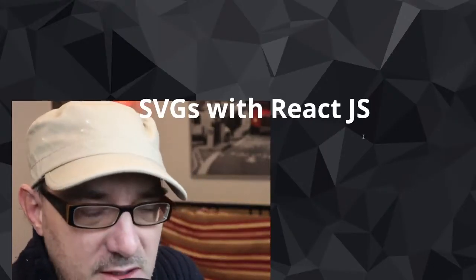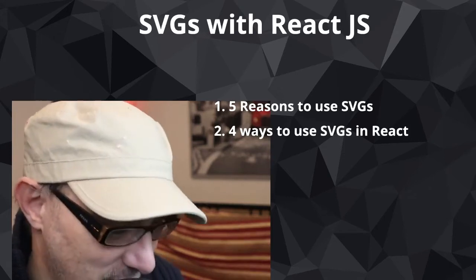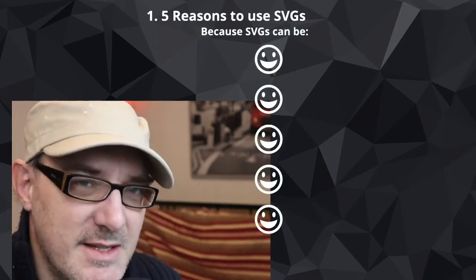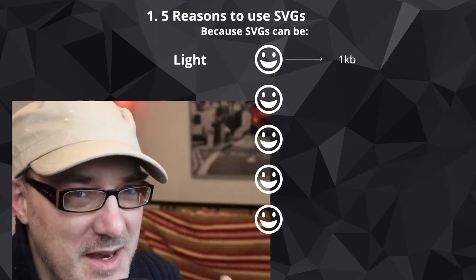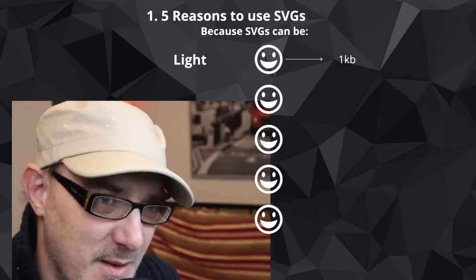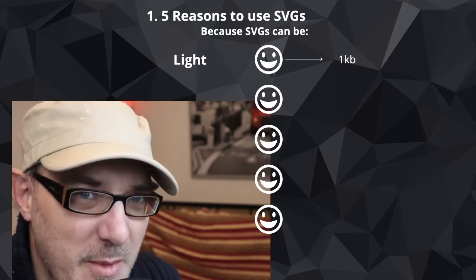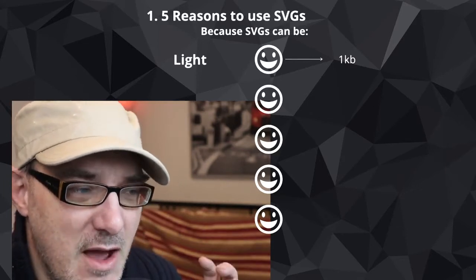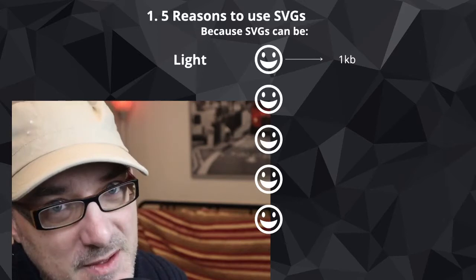Let's get into using SVGs with React.js. We have five reasons to use SVGs and four ways to use them in React. The first reason is that SVGs can be lightweight. A properly done SVG without excessive detail can be one to two kilobytes, where an equivalent PNG file would be at least ten times as big. In general, for a simple illustration, an icon, or anything pictorial, SVG is the perfect fit and will make your website load faster.